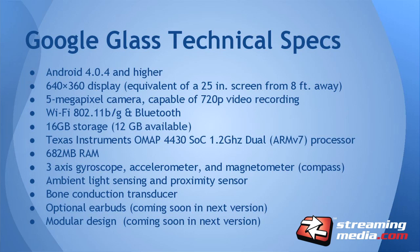Here are the technical specs. The key point: this is not a super powerful computer. It only has 682 megabytes of RAM — your phone has more than that. It's a 5-megapixel camera — pretty basic. If you're trying to compare Glass to a mobile phone, it doesn't really compare, but it's not supposed to. It's a different kind of device that is paired with your phone. Some of the cool things it has, including the accelerometer — let me show you this as a sort of demo.